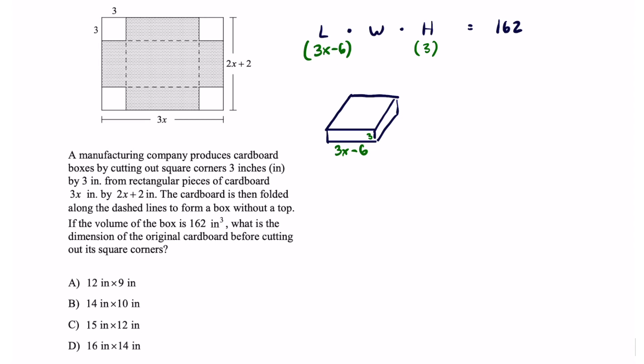Similarly we can write the expression for the width in the same manner. This whole thing is 2x plus 2 but I got to subtract 3 and 3 twice because I'm ripping off those corners. And if I were to fold that up the expression for your width is going to be 2x plus 2 minus 6 which simplifies to 2x minus 4.